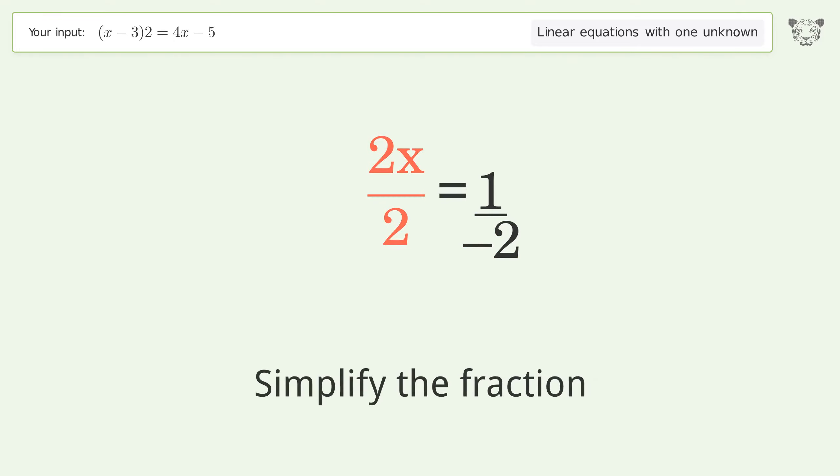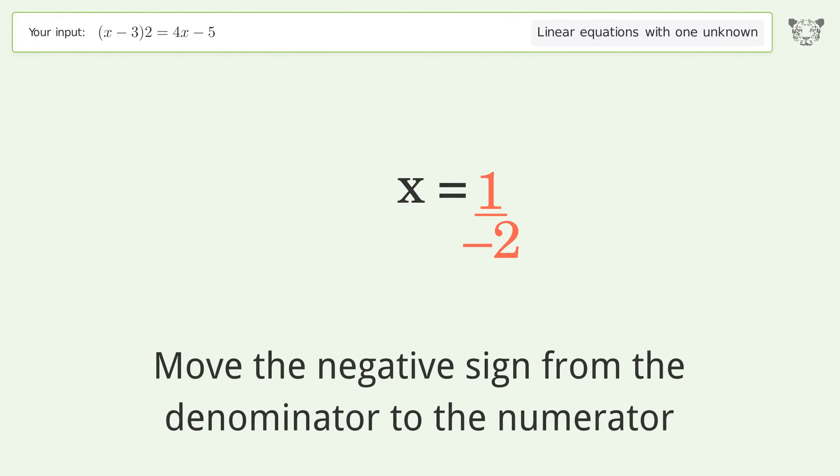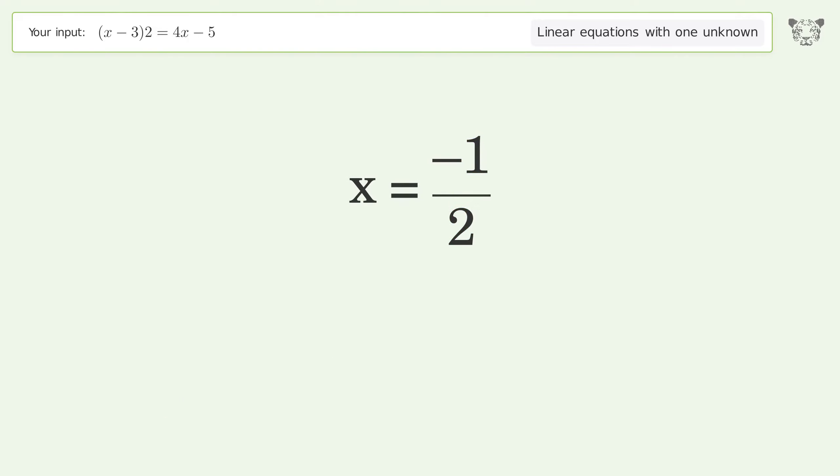Simplify the fraction. Move the negative sign from the denominator to the numerator. And so the final result is x equals negative 1 over 2.